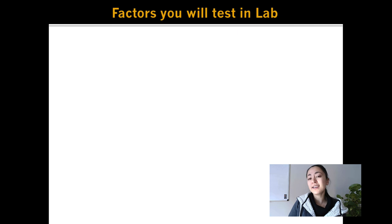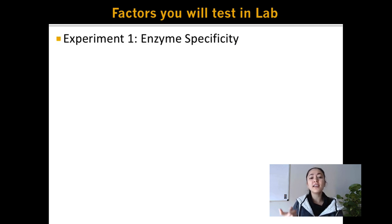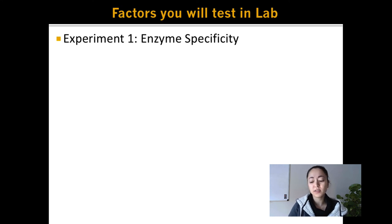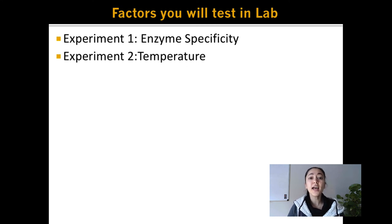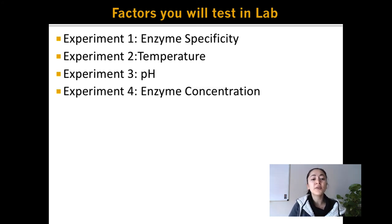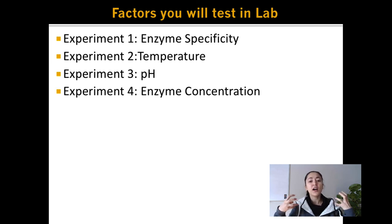What factors will you test in lab? First, you'll be testing the enzyme specificity of catalase — seeing whether catalase will react with other things besides hydrogen peroxide. Second, you'll be testing temperature: at what temperature does catalase work the best? Third, pH: at what pH does catalase work the best? In the last experiment, you'll be looking at how manipulating the concentration of the enzyme catalase actually affects how much hydrogen peroxide can be broken down.